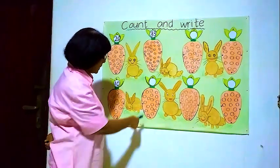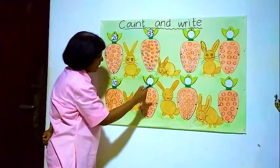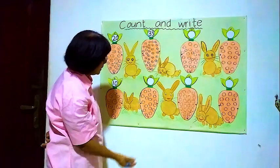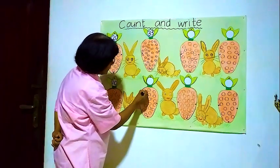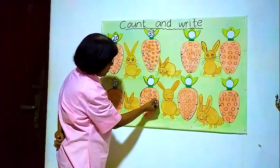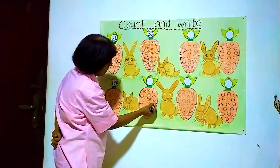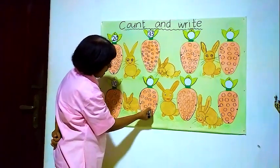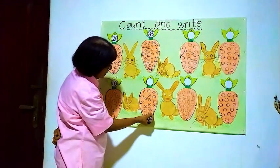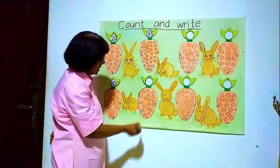Now we will go to the next carrot down here. We will start from here and see how many balls are inside this carrot. 1, 2, 3, 4, 5, 6, 7, 8, 9, 10, 11, 12, 13, 14, 15, 16, 17, 18. Eighteen.